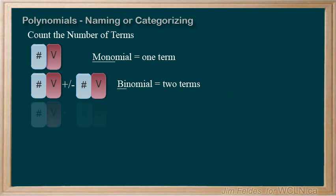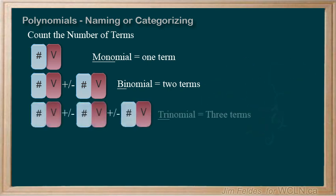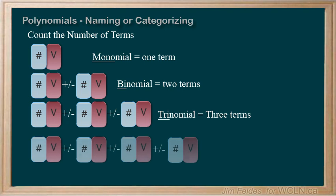And for a polynomial with three terms, we use the prefix tri, like tricycle or triangle. For four or more terms, we simply refer to the math expression as a polynomial.